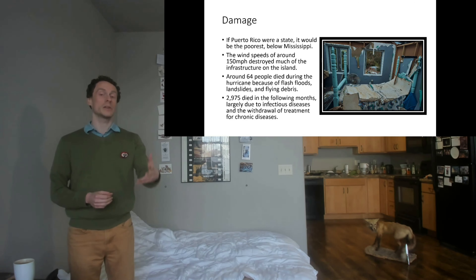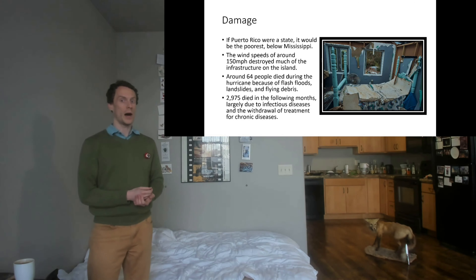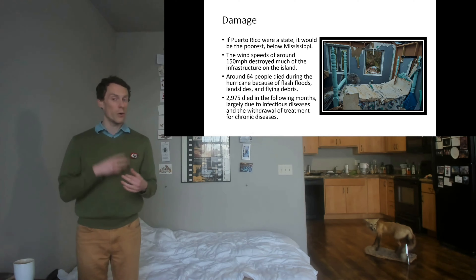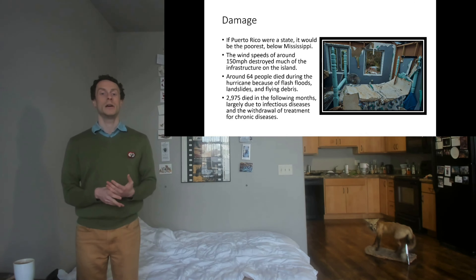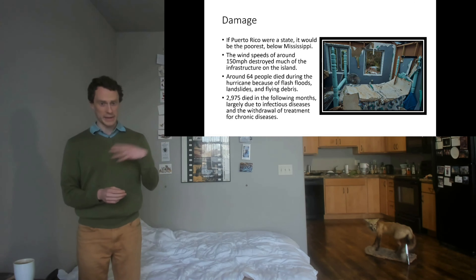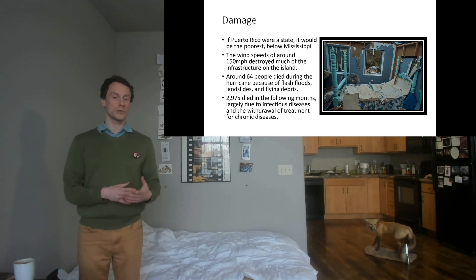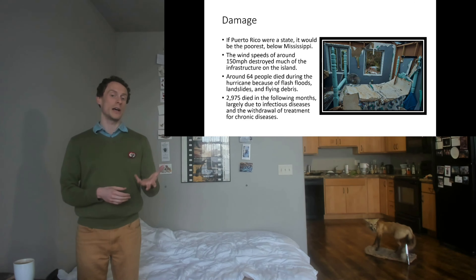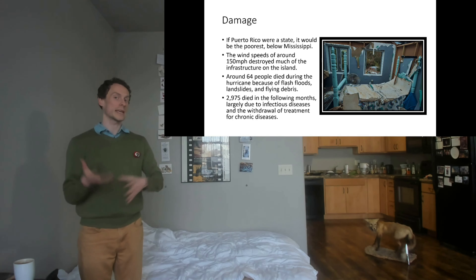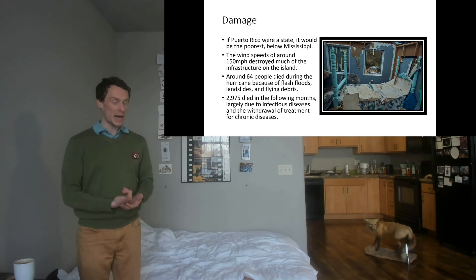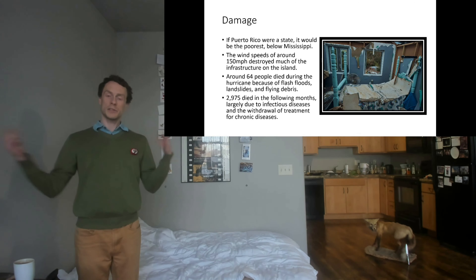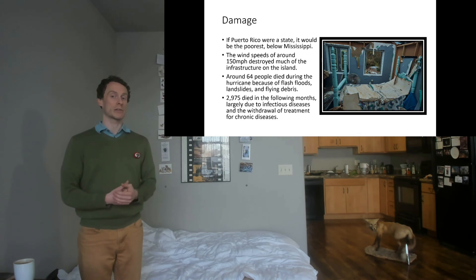Puerto Rico economically had not been doing well — it had been in official bankruptcy, and if it were a state rather than a territory it would be the poorest state, below Mississippi. Over 80 percent of the agriculture on the island was destroyed. All three and a half million people who lived on the island were left without power. People died in flash floods, landslides, and due to high winds.